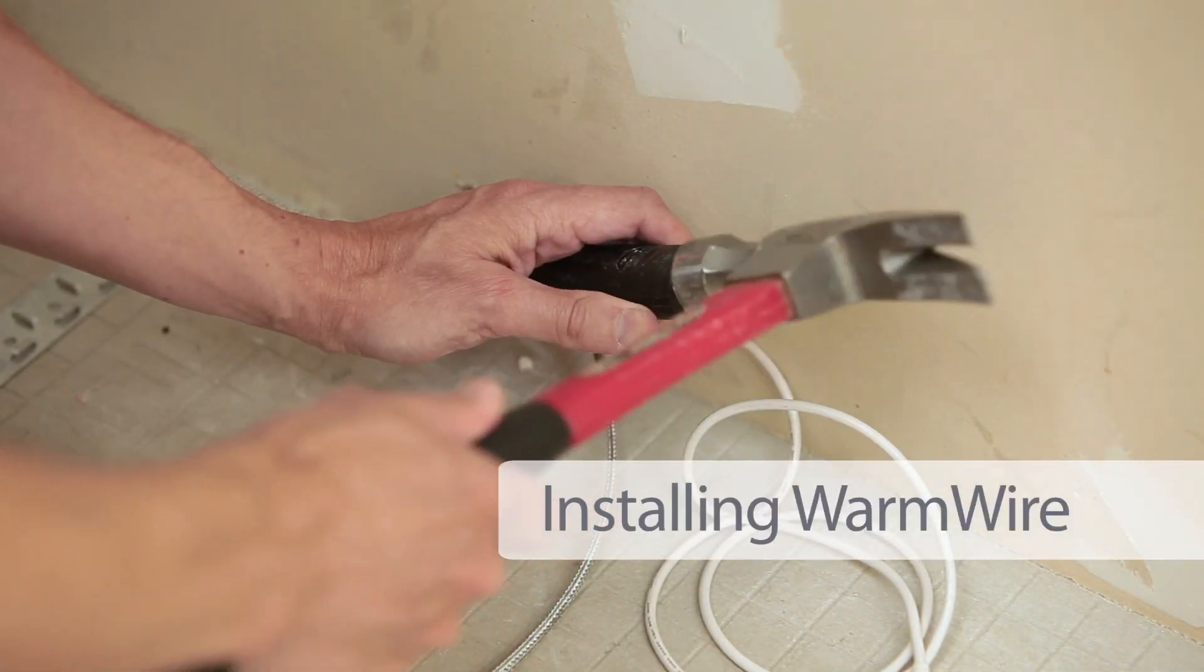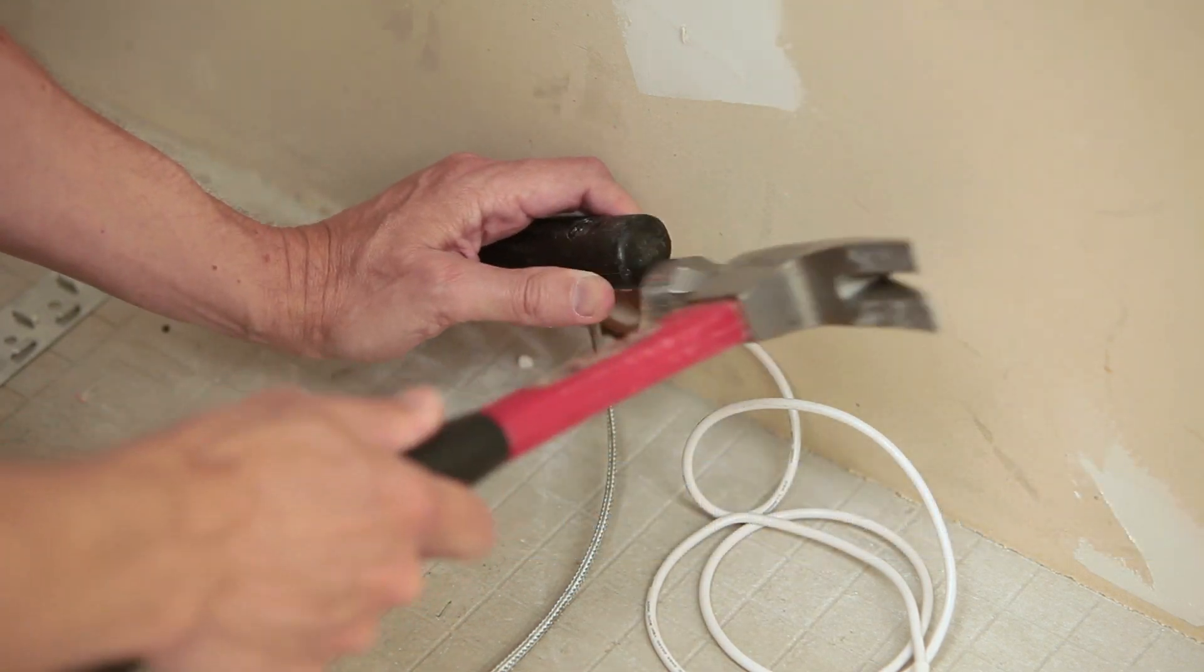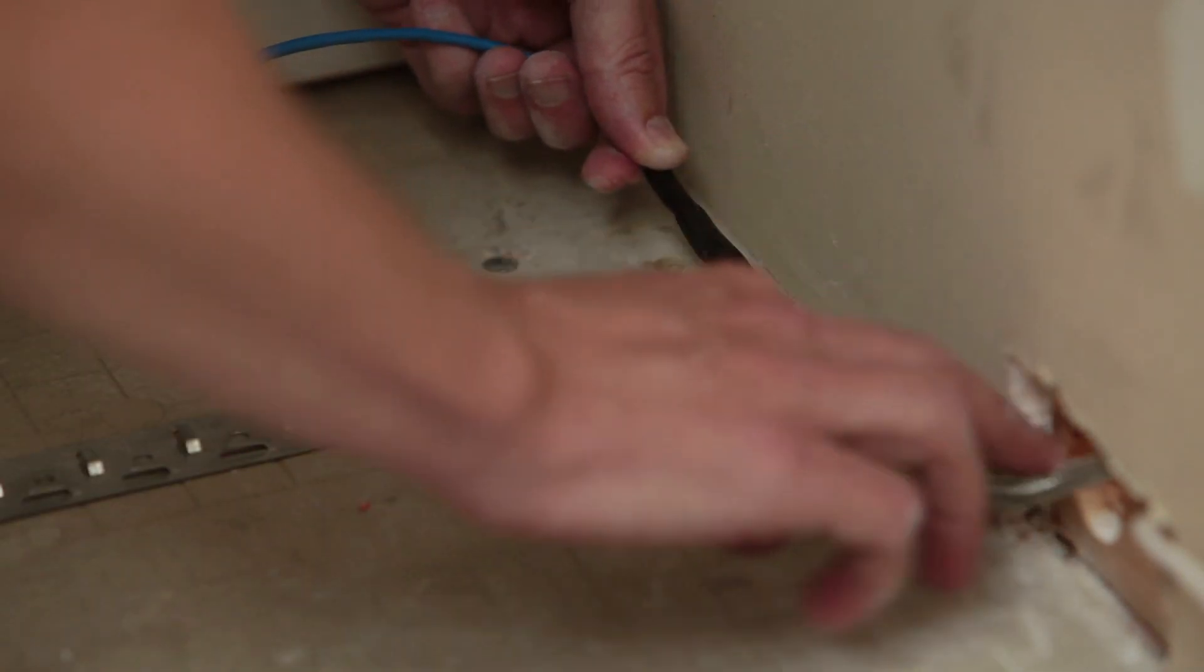Depending on the thickness of the mortar used, it may be necessary to chisel out a portion of the subfloor to recess the factory connection. To secure this splice, apply hot glue to the floor.